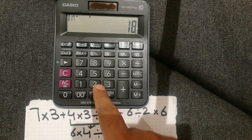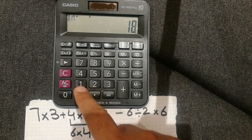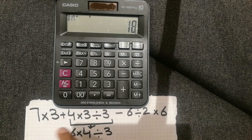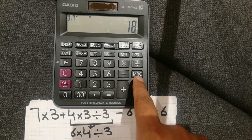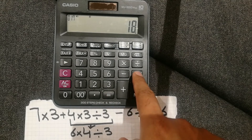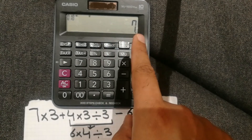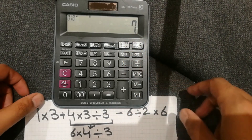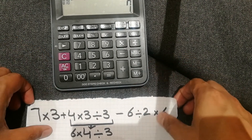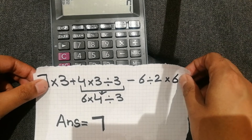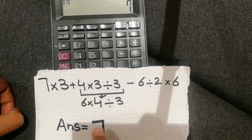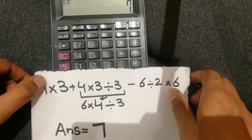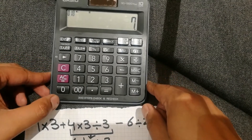Now to get the total answer for the whole equation, we press the MRC button. Here we go — we have the exact answer for the whole equation, which is 7. I also did it on paper and you can see the answer is 7 there as well, matching the calculator.